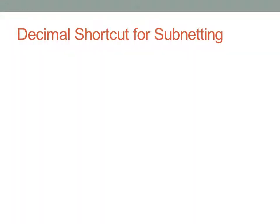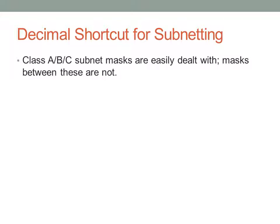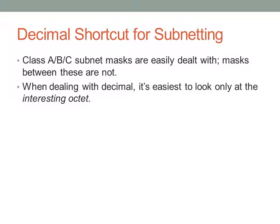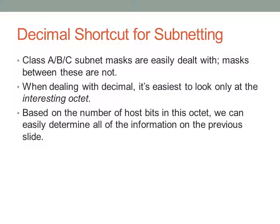I'm going to get into this decimal shortcut. For the class A, B, and C subnet masks, these masks fall on an octet, so you don't have to do any calculations — you can manipulate your subnet and host bits independently. But when you're dealing with decimal subnet masks that fall in between, it's easier to look at only the interesting octet — the octet where the break does fall. We look at the number of host bits in that octet to determine a magic number we can use to derive a lot of relevant network information.